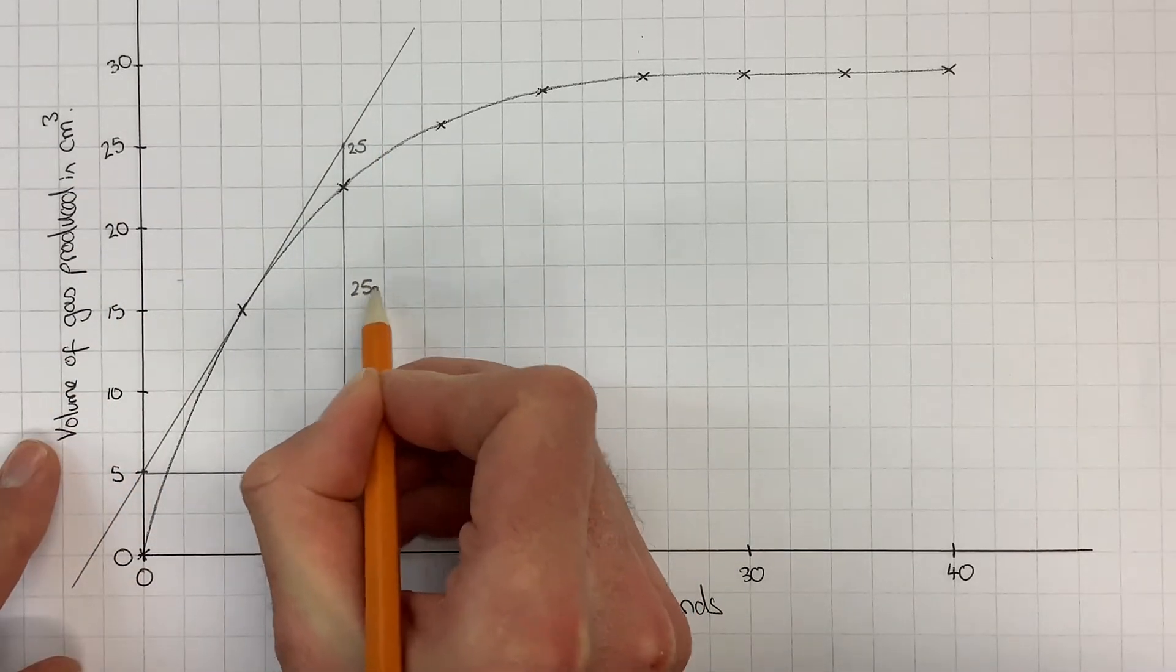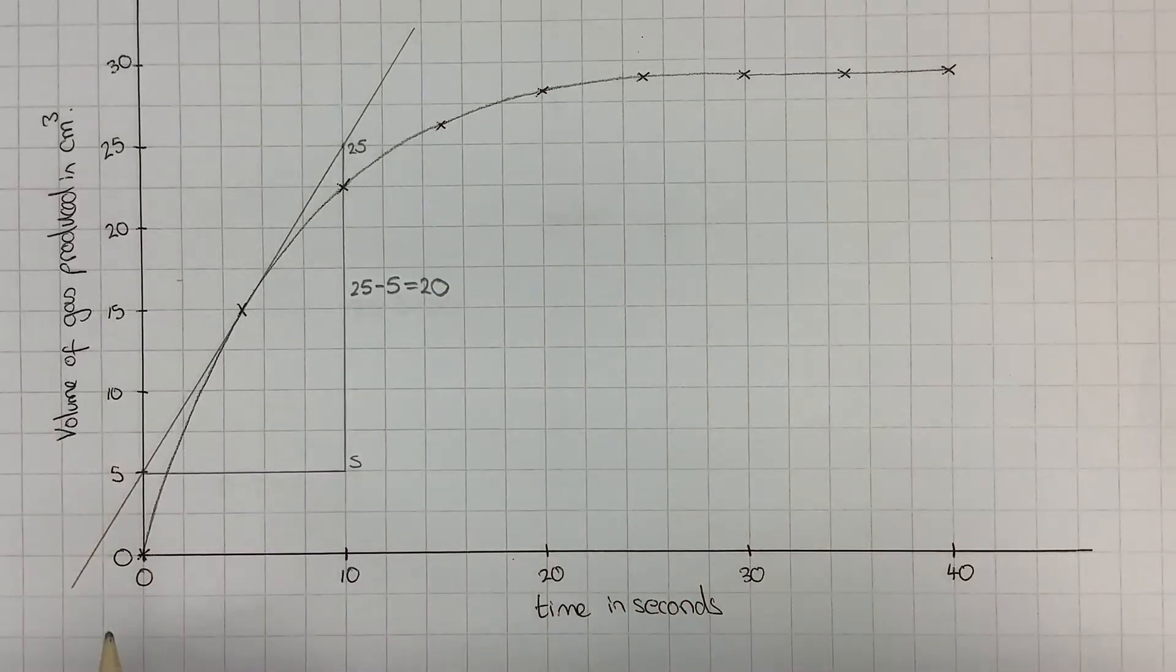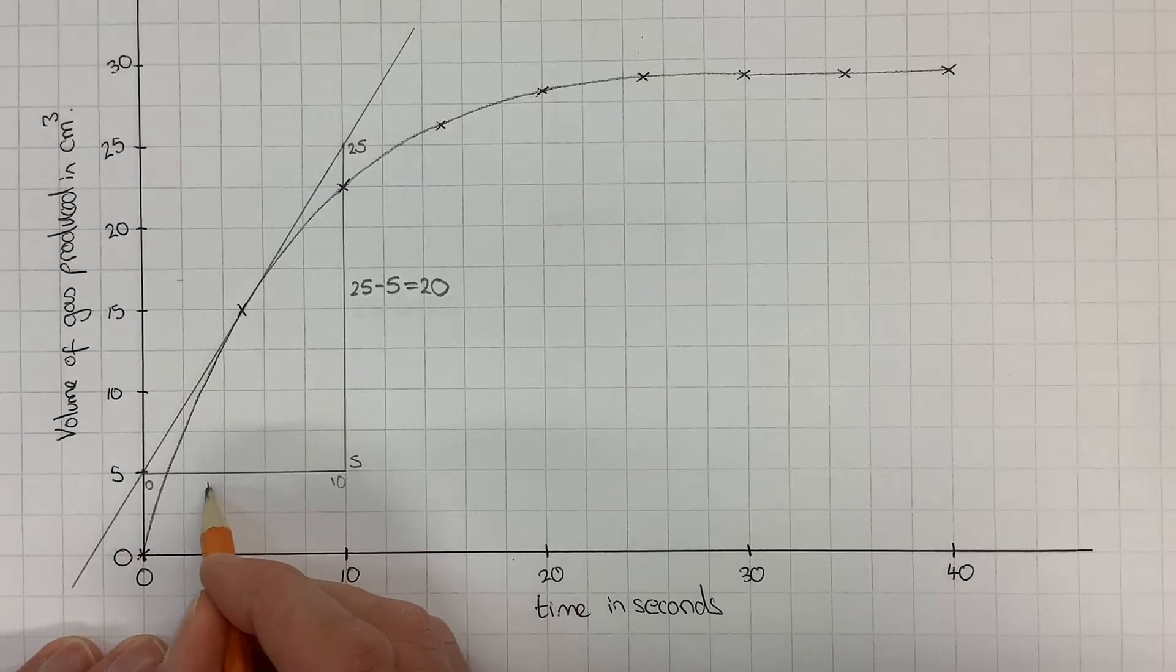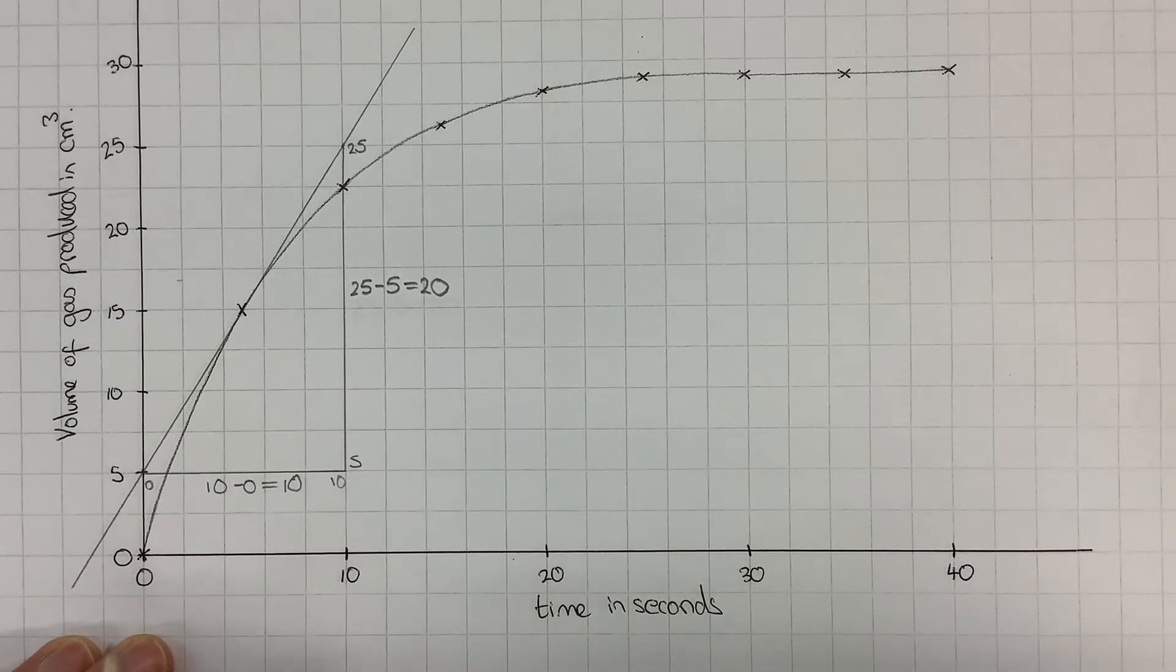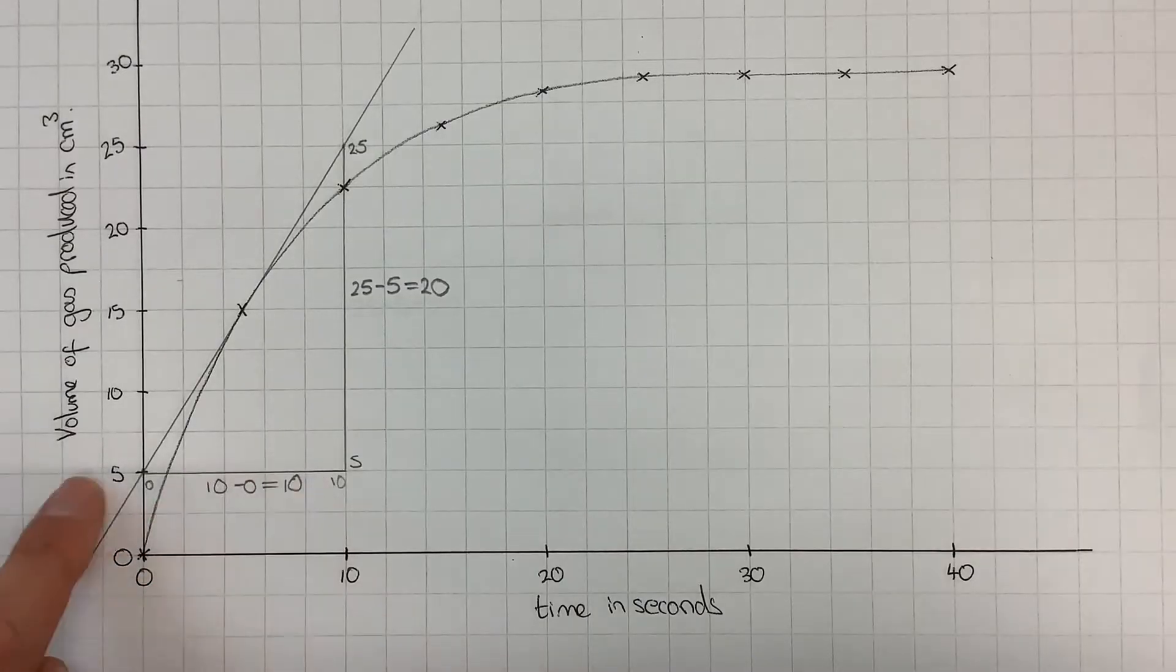For the time, it went from 0 up to 10, so the change in that would be 10 minus 0, which would give me 10 seconds. Now I've got my change in the vertical and change in the horizontal.